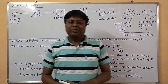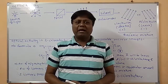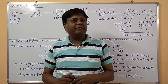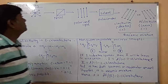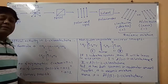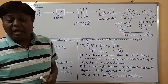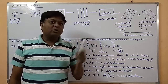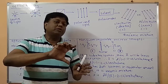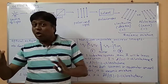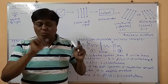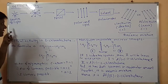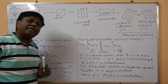Today I am introducing a very important term: optical activity. Optical activity is the property of a substance to rotate the plane of polarized light either clockwise or anticlockwise. Consider this is the source of light — the source of light produces light in all directions.